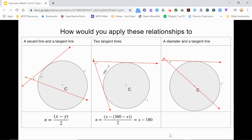Lastly, in the case of a diameter and a tangent line, the angle formed by the lines still intercepts two arcs. Only in this case, because the intercepted arcs lie on a semicircle, the smaller arc will be 180 minus x. So again, n is equal to half the difference between x and 180 minus x, which simplifies to x minus 90.